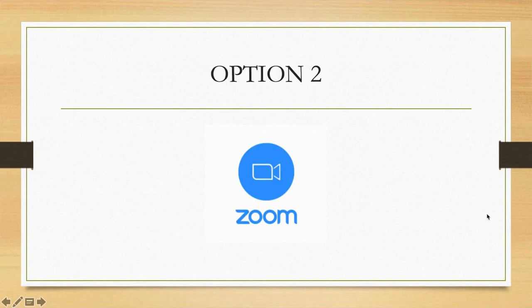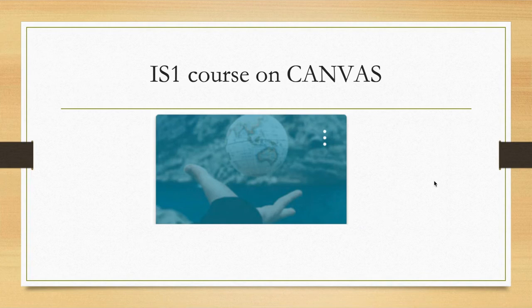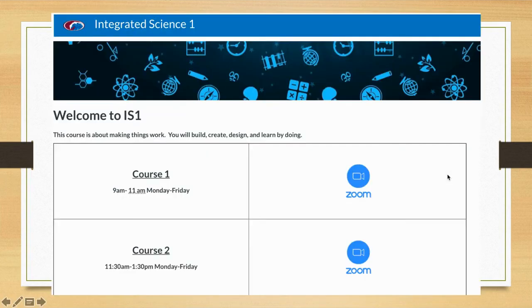Option two is to click on the Zoom link located inside your Canvas course for IS-1. Simply go to the Canvas course and find the IS-1 course button. When you open it, this is the homepage that will show up. The homepage is specific for your teacher.